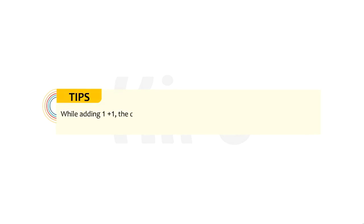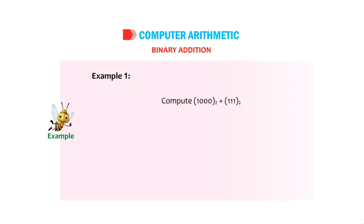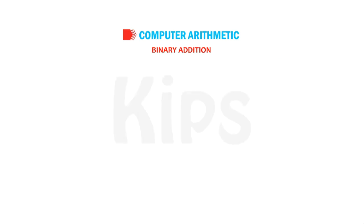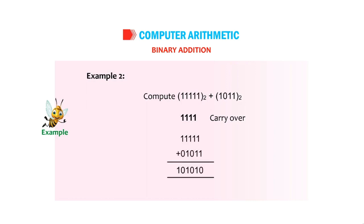When adding 1+1, the output is 10 — where 0 is written under the same column and carryover 1 is shifted to the next place, just as in decimal addition. Example: Compute 1000 base 2 + 111 base 2. 1000 + 0111 = 1111. Another example: Compute 11111 base 2 + 10111 base 2. Adding with carryovers gives the result 101010 base 2. Observe that remainders and carries are handled column by column from right to left.